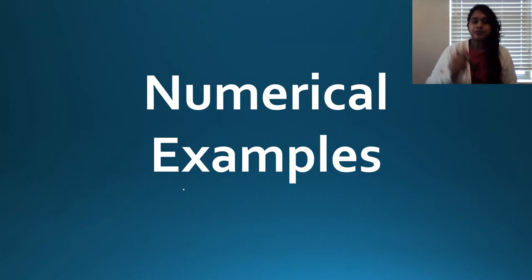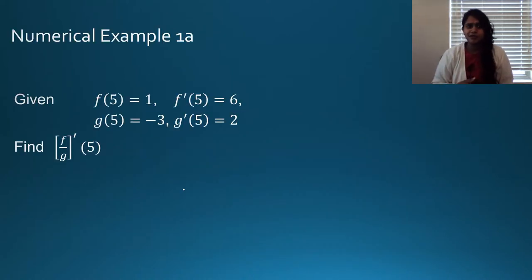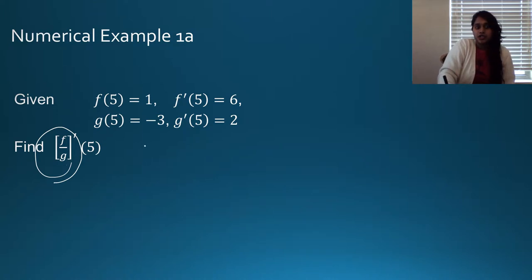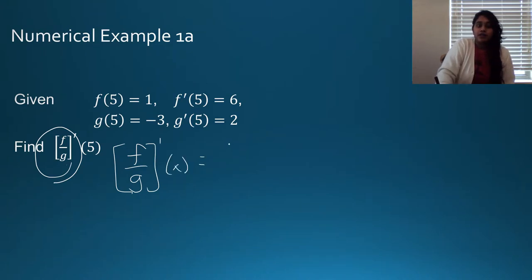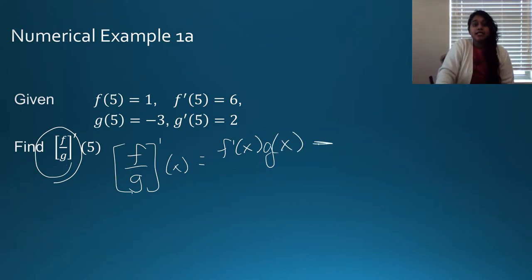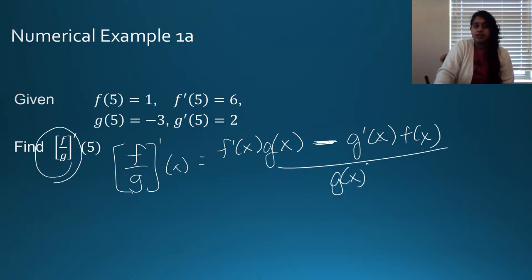Here we have some numeric examples. That's the exact same problem we saw in unit 2.6, except instead of f times g, this is f divided by g. The very first thing I'm going to do is create my equation: the derivative of f/g is f prime times the bottom, minus the derivative of the bottom times the top, all over the bottom squared.